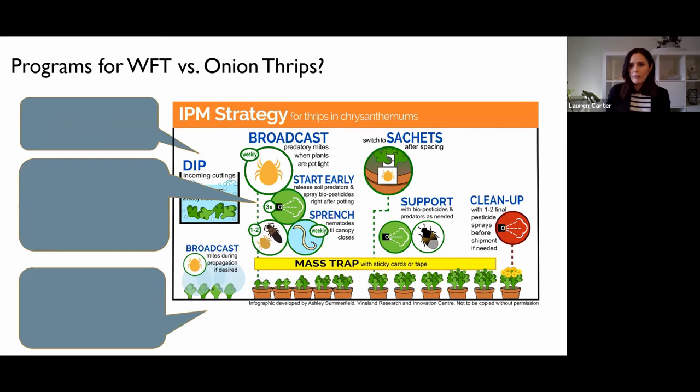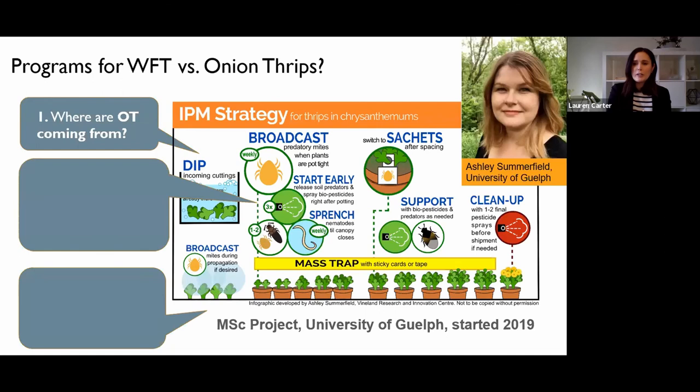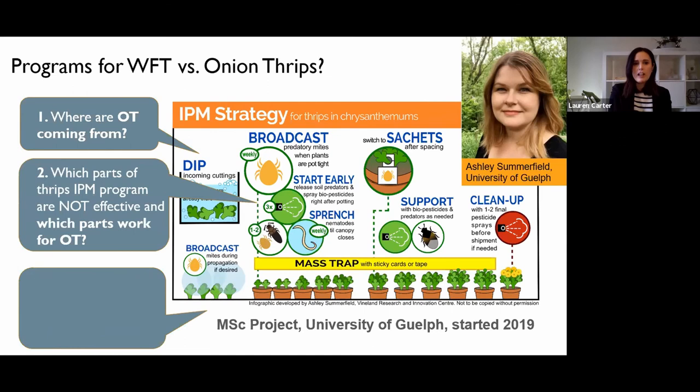We got a grad student on it — which is what you do when there are too many questions to answer. Her job is to figure out first of all where these onion thrips are coming from, which part of this IPM program is not effective for onion thrips and which parts work, and how we can change this infographic or program to work for multiple thrips species at once.